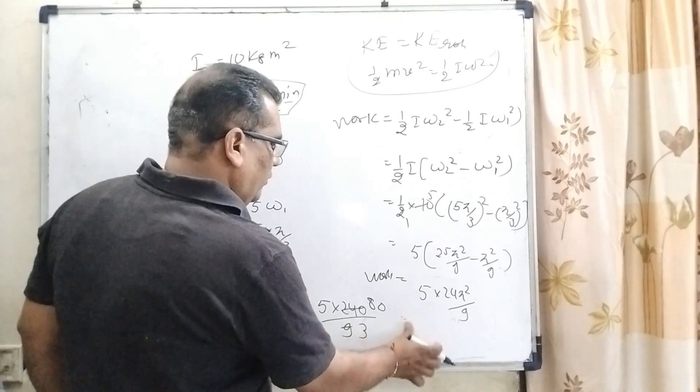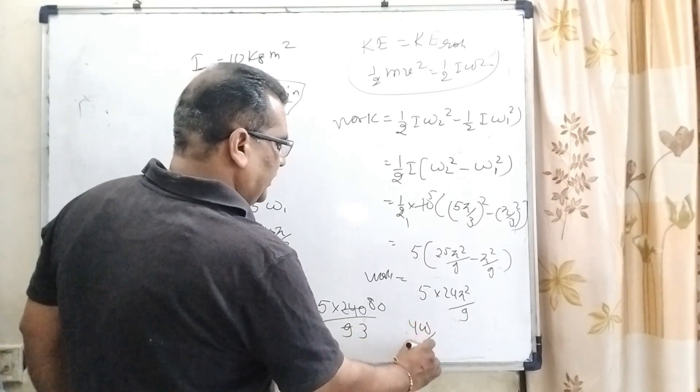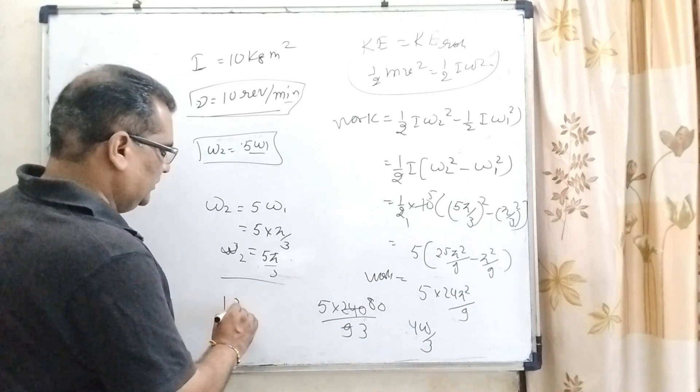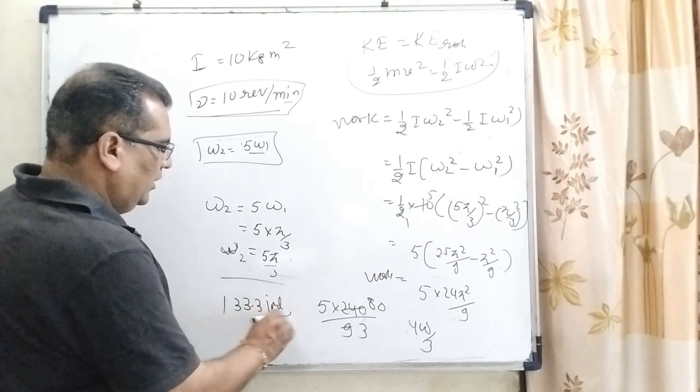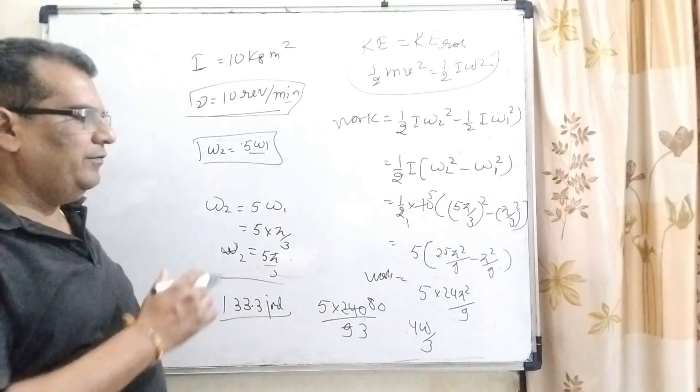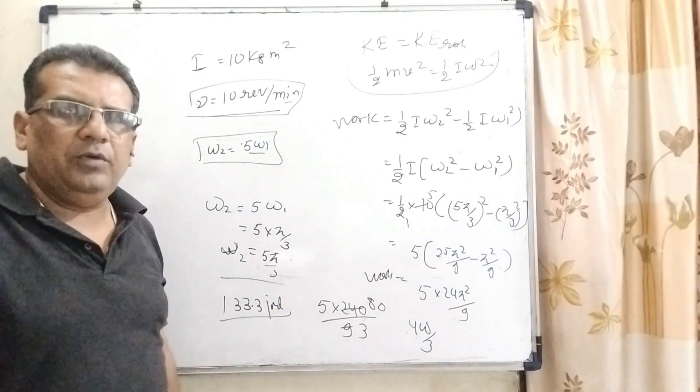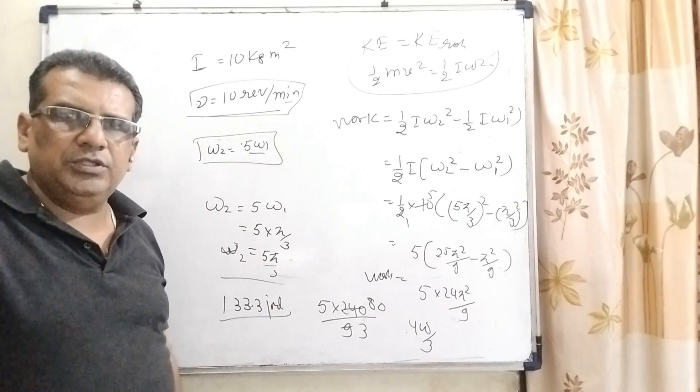which is 240 by 9. So, here, 240 by 3, then approximately value 3 into 1 is 3, that is, 133 point joule, our approximate calculation. And, if you have to calculate the actual value, that is, 131 point joule. I hope so, you understood this question.